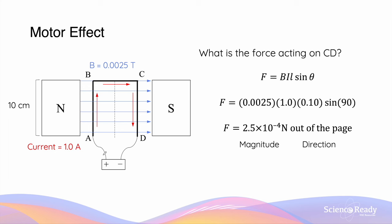However, since conventional current flows from the positive to the negative terminal of the battery, the direction of current will be opposite as it flows through AB versus when it goes from C to D. Since the direction of current is reversed, when you use the right-hand palm rule to determine the direction of force, that direction will also be reversed.